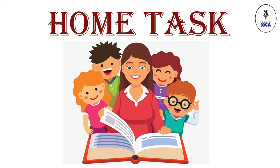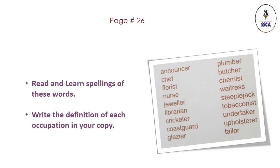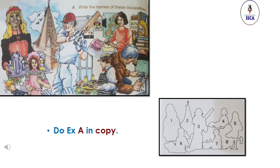Alright students, I hope you understood what occupations are and different types of occupations. Now let's move towards your home task. First of all, you have to read and learn the spellings of these occupations from your book. Then you have to write the definition of each occupation in your copy from the video. Now let's move towards book exercises. In exercise A, you have to write the names of occupations shown in the pictures in your copy according to the number of the picture.